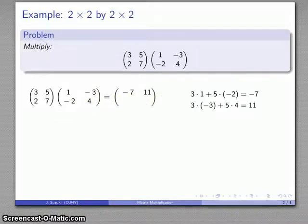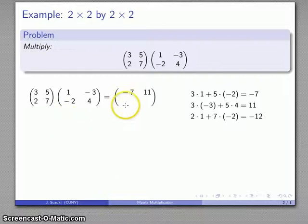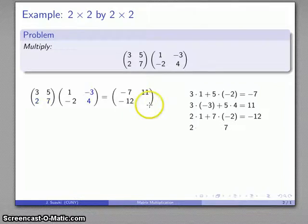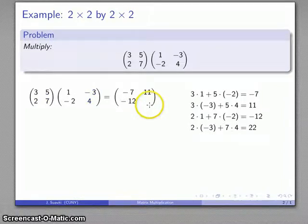And continuing in this fashion, second row times first column gives me my second row, first column entry, negative 12. And finally, second row, second column gives me my last entry, 22.